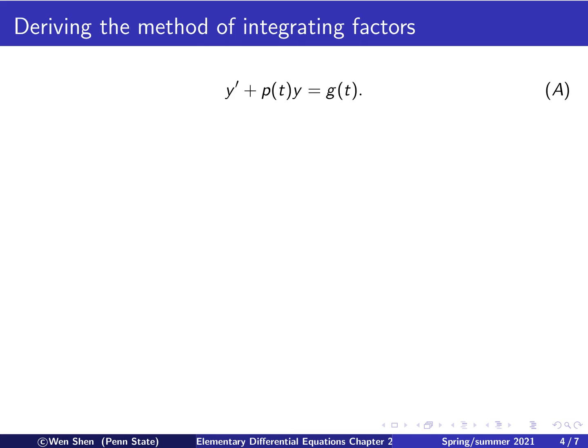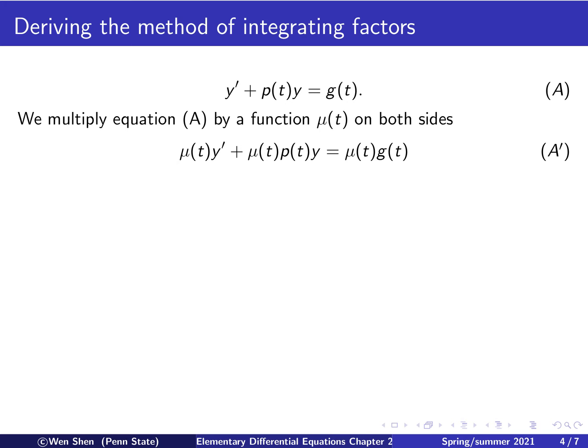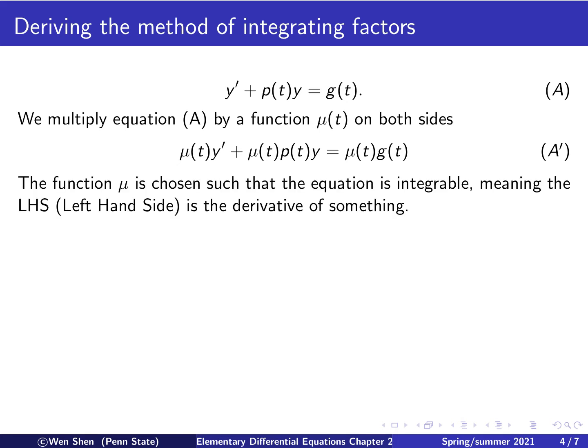Now let's go through the derivation for the method. Here we repeat our standard form of the linear ODE. Now we multiply this equation A here on both sides, a function mu of t. Then we will get, every term will be multiplied by mu, so we get mu y prime plus mu times p times y equal mu times g. Now this function mu here is carefully chosen. So we will choose the function mu in such a way that the equation is integrable. What does it mean it's integrable? It means the left-hand side of my equation here is actually the derivative of something.